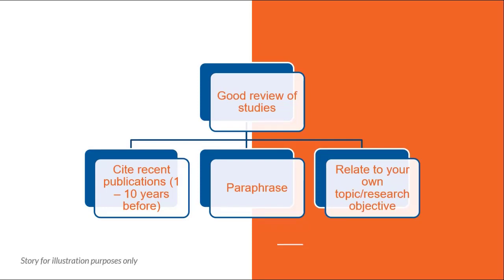There are at least three elements that will make up a good review of studies. First is that you have to cite recent publications. By recent publications, I mean publications which are at least ten years before the writing of your own paper or your own project. After ten years, it is basically too old to be included in your chapter 2. So ten years is the maximum. Try to obtain publications published within a year or two years, or at the latest ten years before you write your own research.